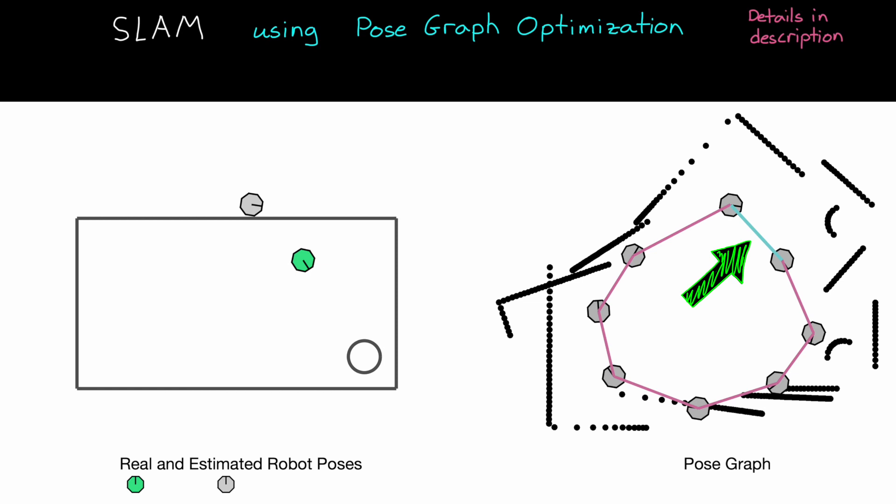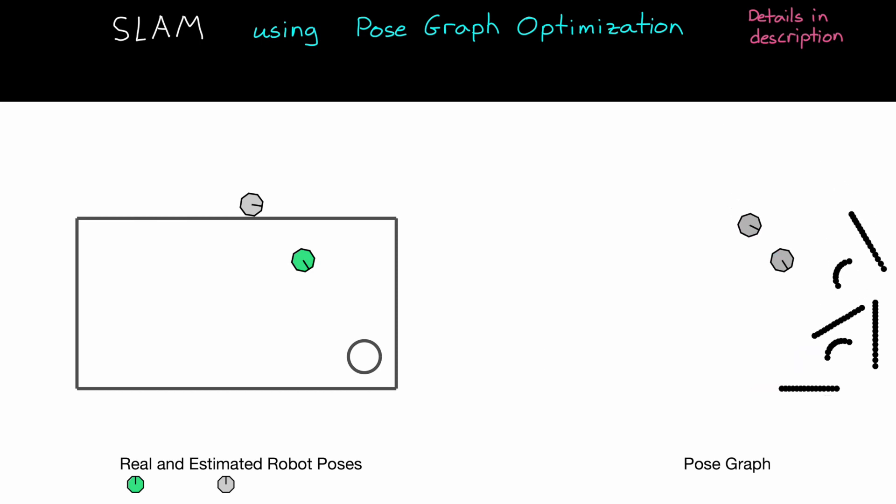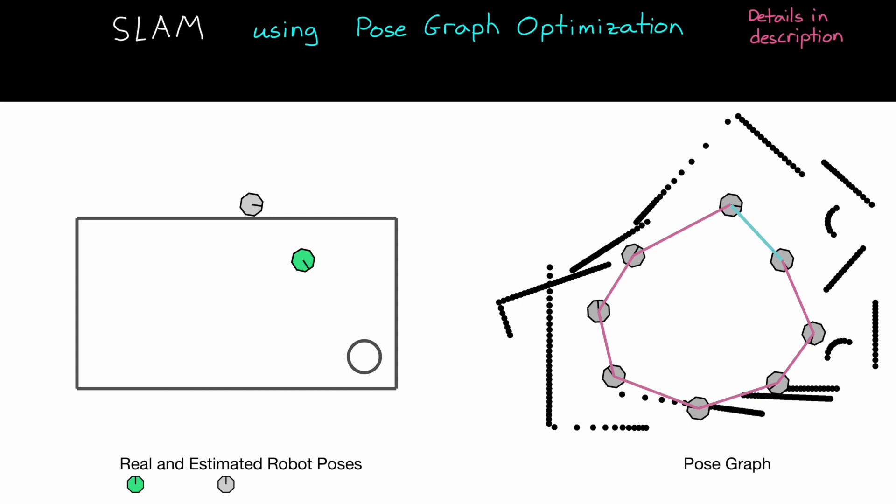This bar has a nominal length of zero since these two poses want to be right on top of each other. And the strength of this rubber bar depends on how confident you are in your external measurements and your ability to associate the two sets of data as the same feature. If you're really confident, like we are in this example, this bar is extremely strong. It really wants to pull these two poses together.